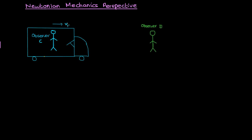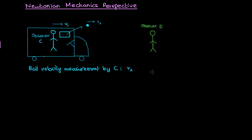This also makes sense from a Newtonian mechanics perspective. If observer C is moving in a car at velocity v1 and throws a ball in front at velocity v2 relative to the car, then when he measures the velocity of the ball in his reference frame he'll get v2. Now what does the stationary observer D measure as the velocity of the ball? Observer D measures the velocity as v1 plus v2, because the ball has the momentum of the car plus the additional velocity v2 imparted to it.